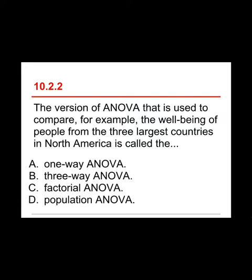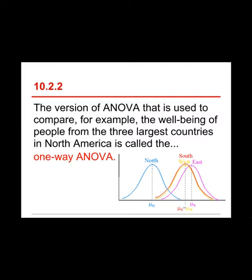Question two: the version of ANOVA used to compare, for example, the well-being of people from the three largest countries in North America is called — a) one-way ANOVA, b) three-way ANOVA, c) factorial ANOVA, or d) population ANOVA. The answer is a) one-way ANOVA. A three-way ANOVA is for when you have three different factors or categorical variables classifying people. Here we have just one classifying variable: which country they're in. Factorial ANOVA is for when you have multiple factors, but here we only have one. Population ANOVA is just something I made up.